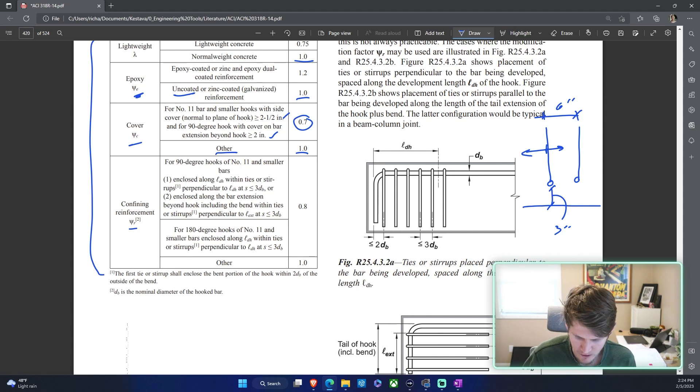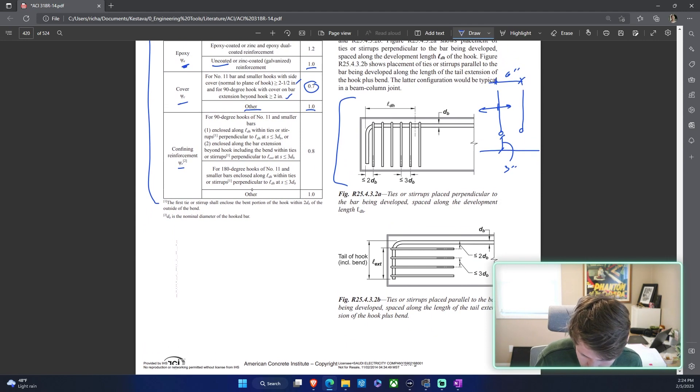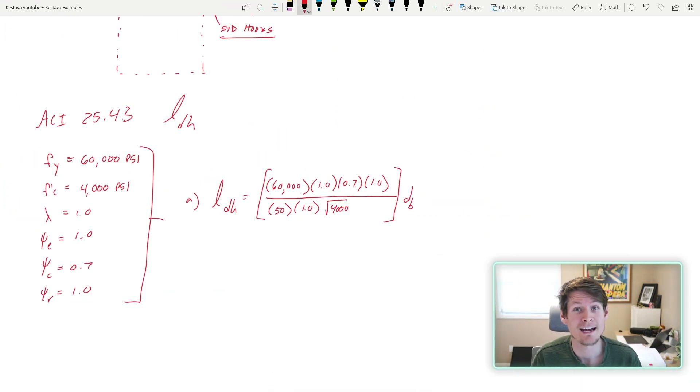Psi_r confinement reinforcement - this one has a lot of additional criteria but it mostly comes down to just if you have stirrups that are confining the full development length of your bar. They give you some nice figures to kind of explain further what they're talking about. We don't have any stirrups or any jazz like that, so for us we're simply just other which is also a 1.0. Don't forget diameter of bar is on the outside of your equation.